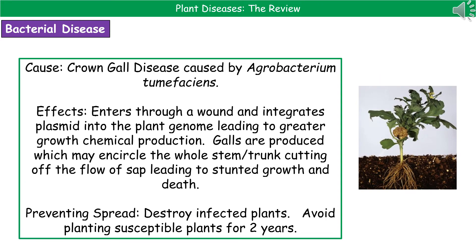The second disease we're going to look at is a bacterial disease of our plants. This one is called crown gall disease, which is caused by the bacterium Agrobacterium tumefaciens. Any plant that's become infected ends up with these large growths around it. If you look at the picture on the right, you can see in the middle there's this lump sticking off the side of the plant.